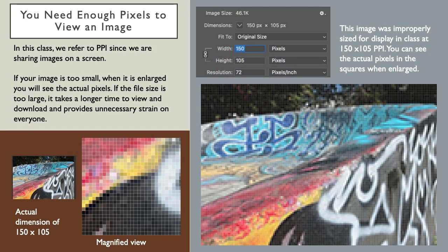In this class, we refer to PPI since we're sharing images on a screen. If your image is too small when it's enlarged, you'll see the actual pixels. If the file size is too large, it takes longer time to view and download, and provides unnecessary strain on everyone. This image was improperly sized for display in a class at 150 by 105 PPI. You can see the actual pixels in the squares. The cutaway shows these in greater detail. On screen, this image would appear as a thumbnail when viewed at actual pixel size on screen. Magnified, you see squares with minimum information.